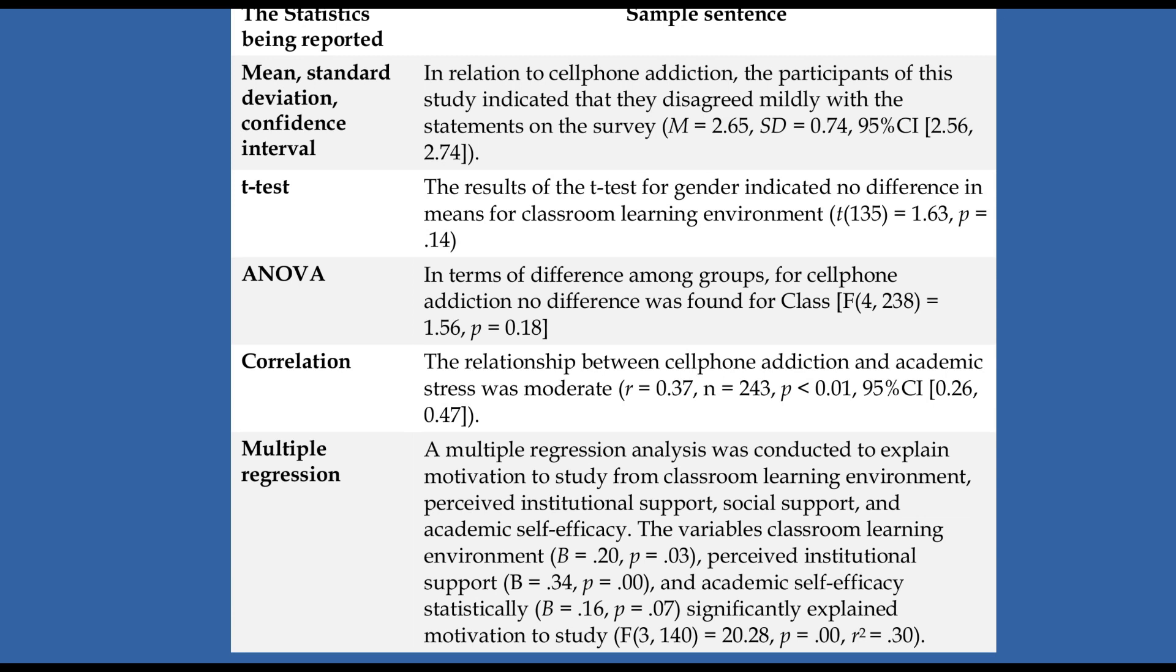So here's an example of how you can go about trying to express your results in writing for an audience. And again, it'd be really boring to actually read this out to you, but this is kind of how we do it. You share your variable right here in relation to your variable. This is cell phone addiction in my example. The participants, this is the students of this study indicated that they, you give a general interpretation, disagreed mildly with the statements of the survey. And then I share all the statistical stuff here. Again, unfortunately, I'm kind of assuming you know what this is, because this video is not about statistics.